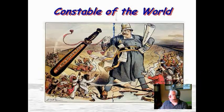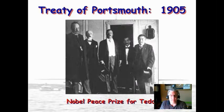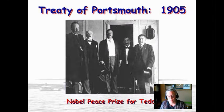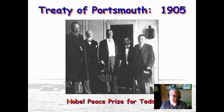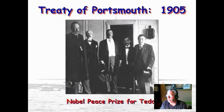Teddy Roosevelt was also a peacemaker — he won the Nobel Peace Prize. There was a war going on between Russia and Japan called the Russo-Japanese War, which started around 1903 and went to 1905, and Japan actually won it. But Teddy Roosevelt negotiated a peace treaty between the two powers and won the Nobel Peace Prize for negotiating this treaty in 1905. The treaty was signed in Portsmouth, I believe that's in New Hampshire. He's not a warmonger; he just doesn't want America to be disrespected, and he wanted America to be seen as a peacemaker as well.